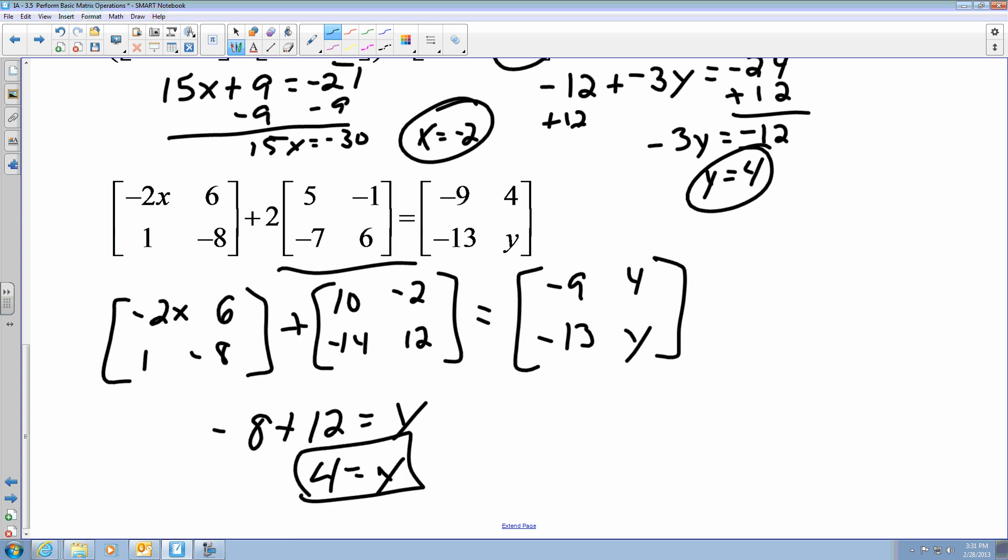To find x, I must take negative 2x plus 10, and that's going to give me a negative 9. I'm going to subtract 10 from both sides, which gives me negative 19 equals negative 2x. Divided both sides by negative 2, gives me x equals a positive 19 over 2. Or if you use decimals, it would be like 9.5.